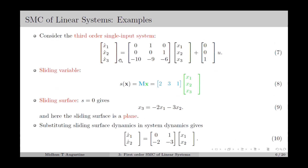As an example, consider a third order single input system as given in equation number 7. The sliding variable is chosen as in equation number 8. Since we have a single input system, the sliding variable is a scalar. Setting S equal to 0 gives 2x₁ plus 3x₂ plus x₃ equal to 0, or equivalently x₃ equals minus 2x₁ minus 3x₂. This is in the form of a linear equation and gives the sliding surface as a plane. Substituting for x₃ in the first two equations, we have x₁-dot equal to x₂ and x₂-dot equal to minus 2x₁ minus 3x₂, which is the resultant dynamics when the state is on the sliding surface.